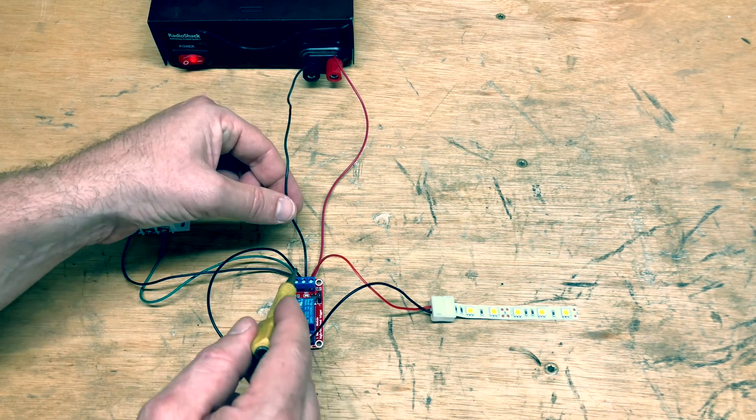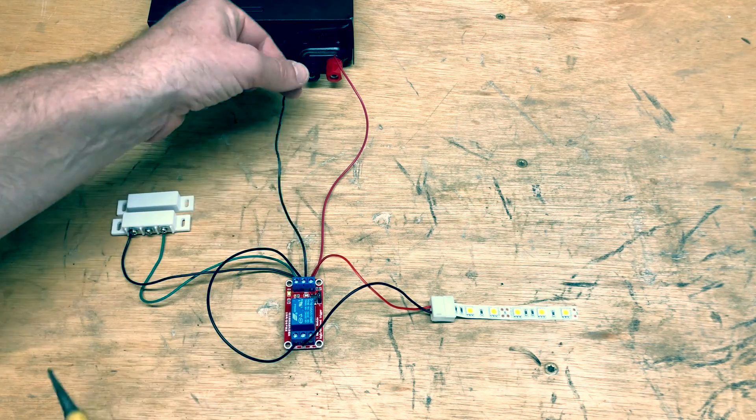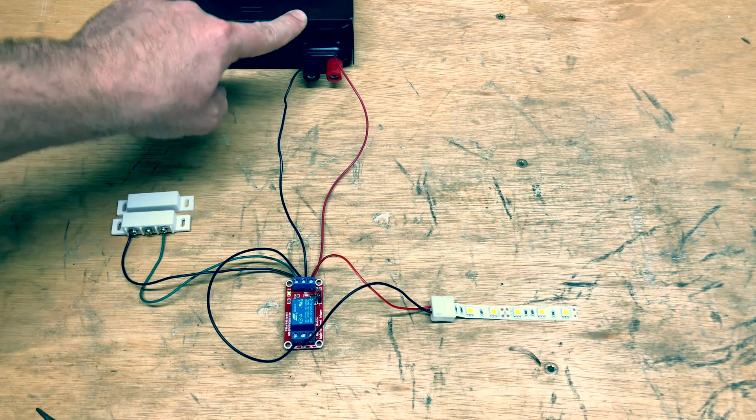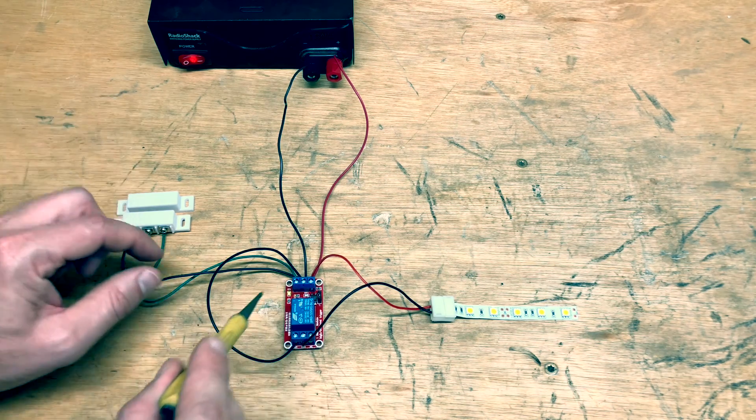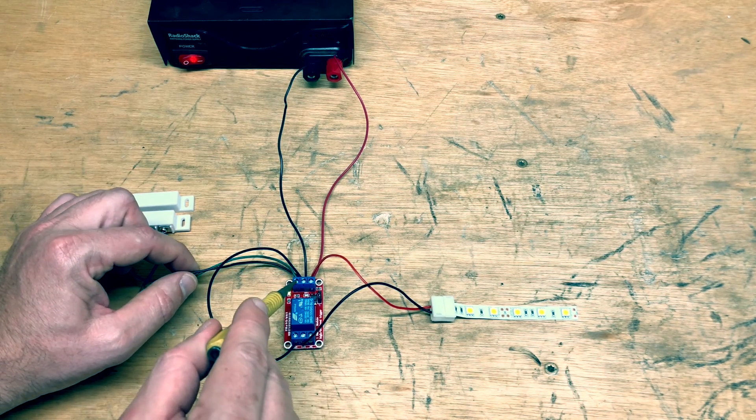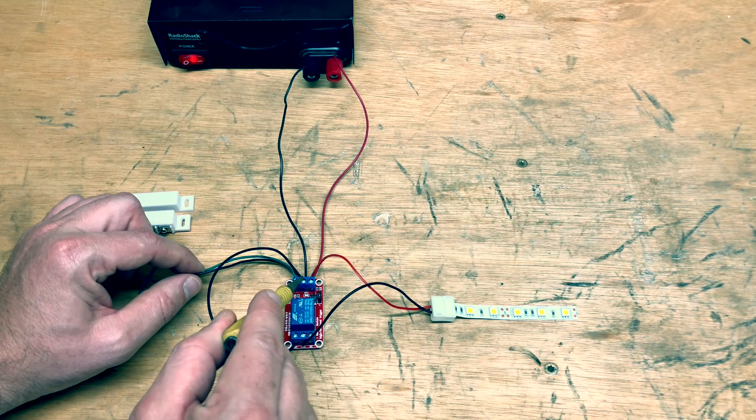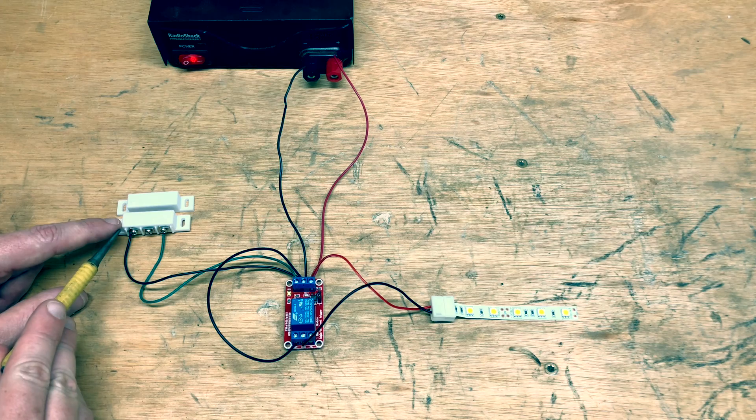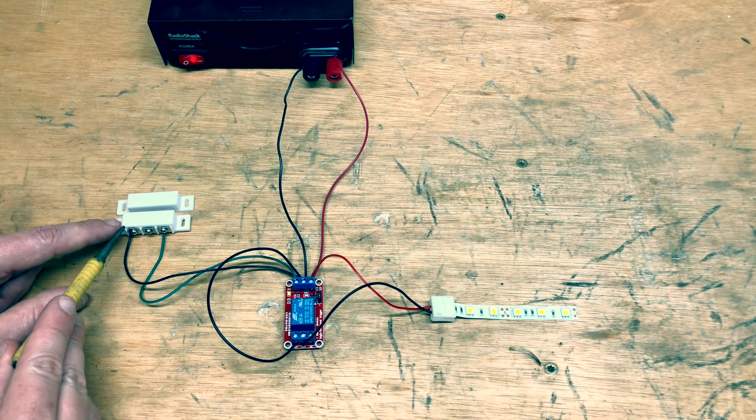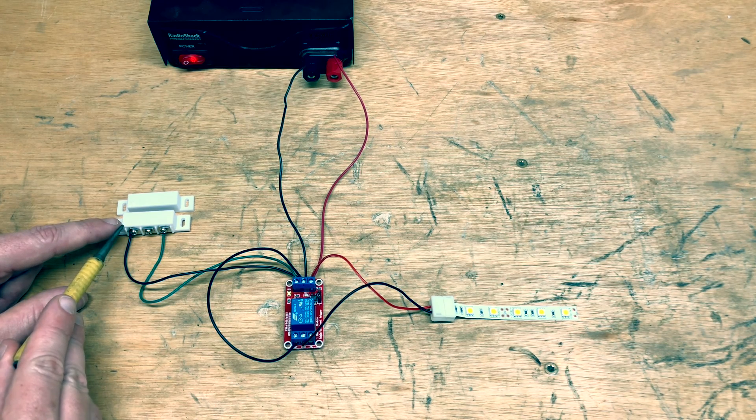And then the DC minus is connected to the negative on your power supply. We have one more wire coming off of our DC minus pin here. And that one is this black one and it goes over to the COM, the COM on your reed switch.